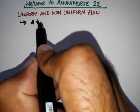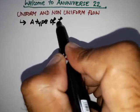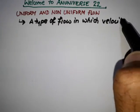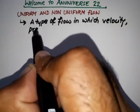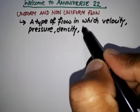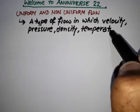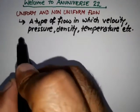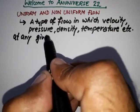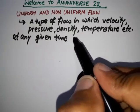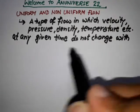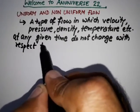Uniform flow is basically a type of flow in which velocity, pressure, density, temperature, etc., at any given time, do not change with respect to space.